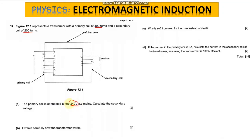The question continues: the primary coil is connected to a 240 volts AC mains. Calculate the secondary voltage. The second part of the question asks us to explain carefully how the transformer works. We'll handle these questions in parts.